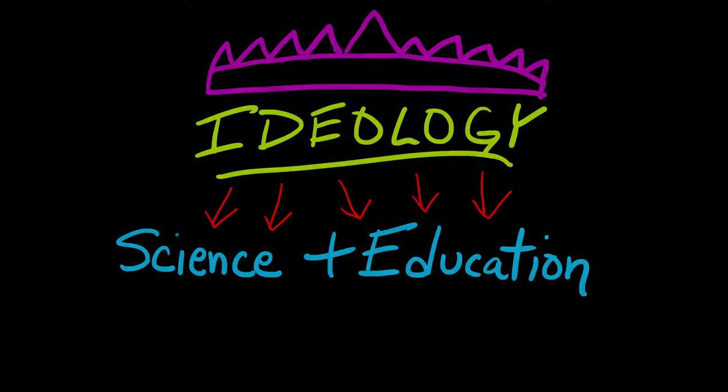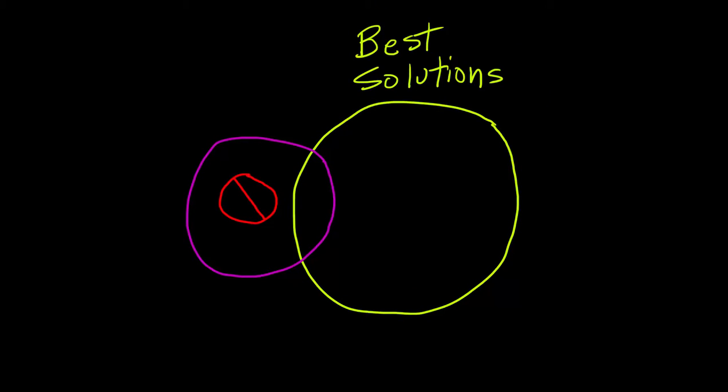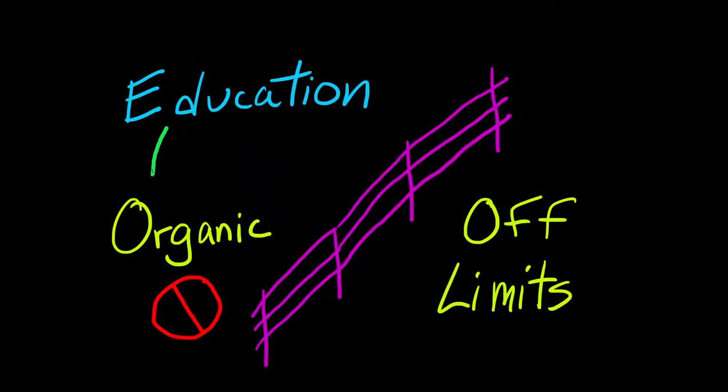And there is the main problem: because the goal of organic farming is not to find the best solutions, but only those solutions that are within its ideology. In education, we teach students that certain potential solutions—those that do not fit the ideology—are off limits.